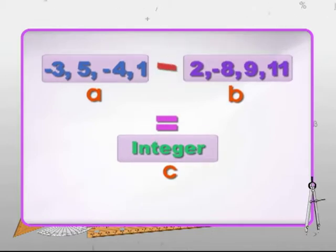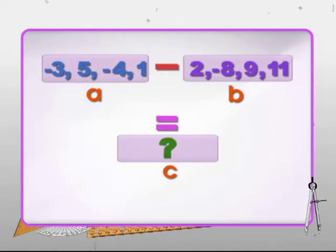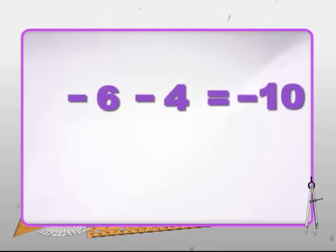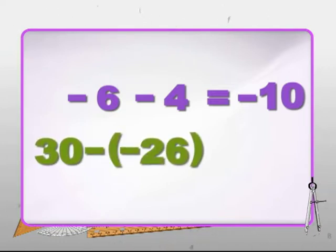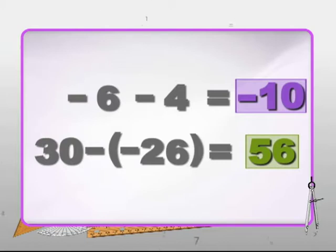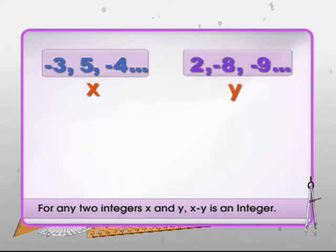The closure property also holds for subtraction of integers. Subtracting 4 from minus 6 gives minus 10. Subtracting minus 26 from 30 gives 56. In both cases the answer is an integer, so integers follow the closure property during subtraction as well. In general, if x and y are integers, x minus y will also be an integer.